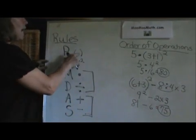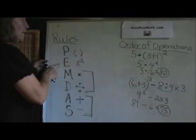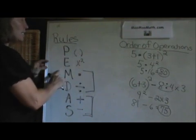P stands for parentheses and that is our first step. E is for exponents. That is the second step.